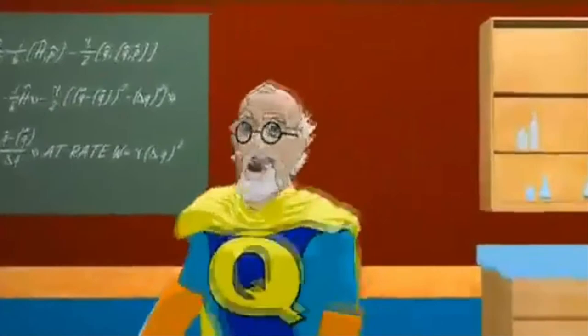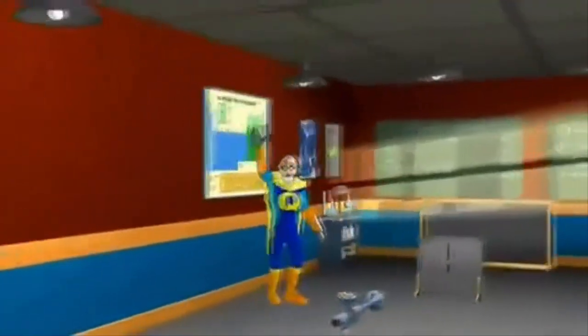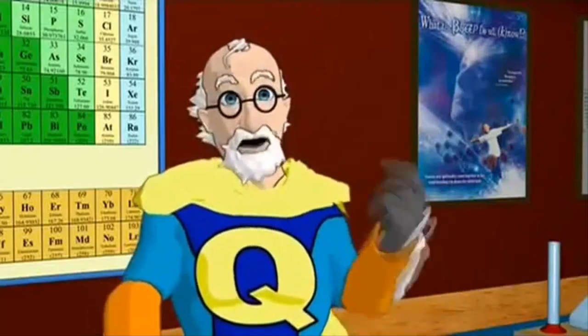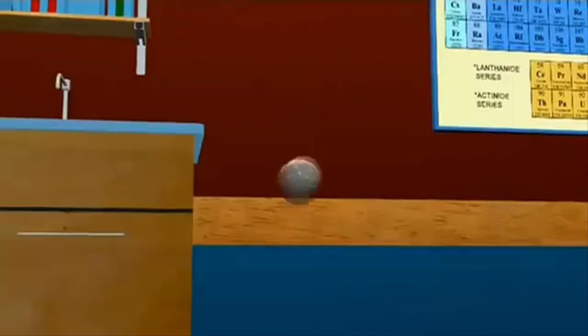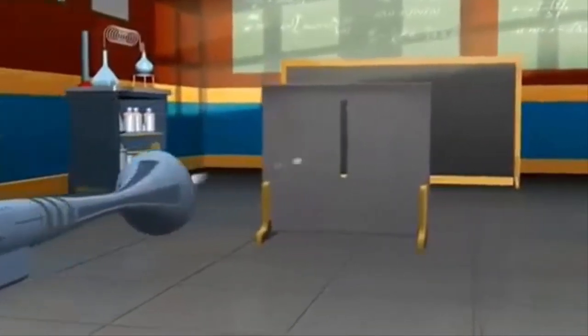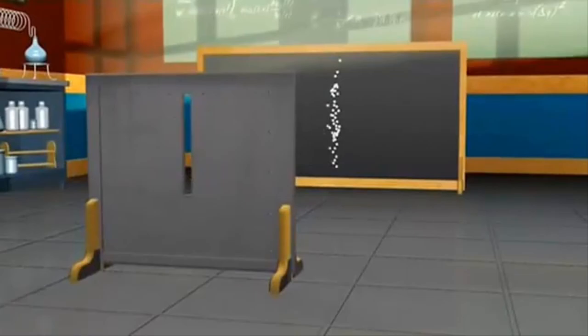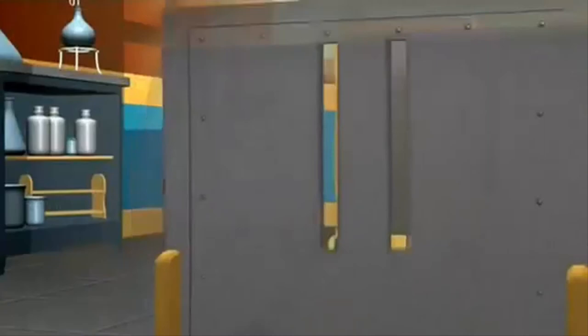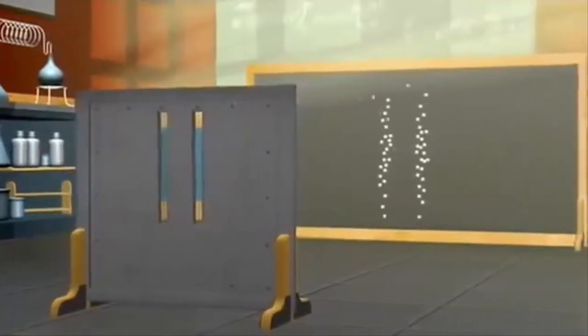And here we are, the granddaddy of all quantum weirdness, the infamous double-slit experiment. To understand this experiment, we first need to see how particles, or little balls of matter, act. If we randomly shoot a small object, say a marble, at the screen, we see a pattern on the back wall where they went through the slit and hit. If we add a second slit, we would expect to see a second band duplicated to the right.